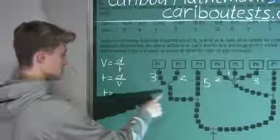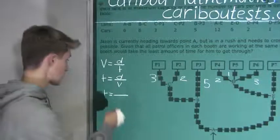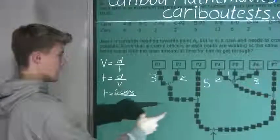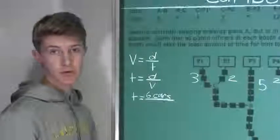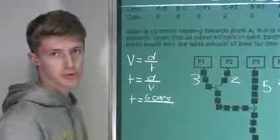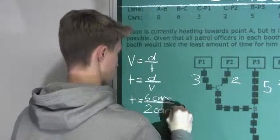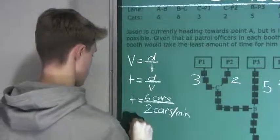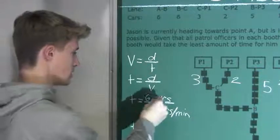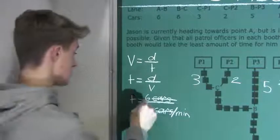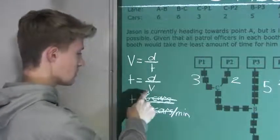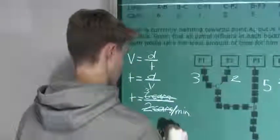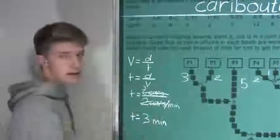So for B to C, it would be, well, the distance is one, two, three, four, five, six cars. And the velocity, well, that is two cars per minute, because it is splitting up into two booths. All right, so now we can just simplify, so we have T is equal to, the cars cancel out, and then the six and the two can be simplified down to just three. So then we have three divided by minutes is three minutes. So the time that it takes to get from B to C is three minutes.